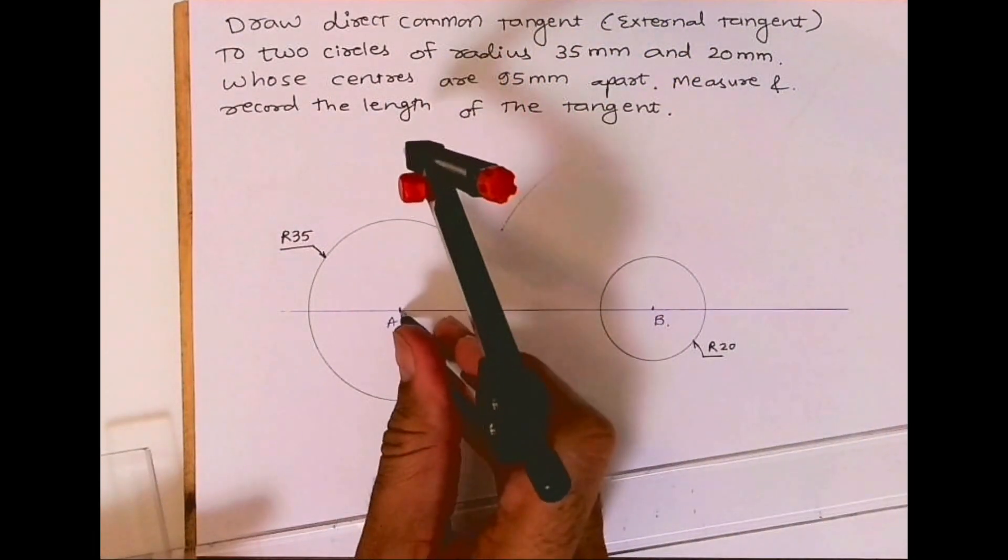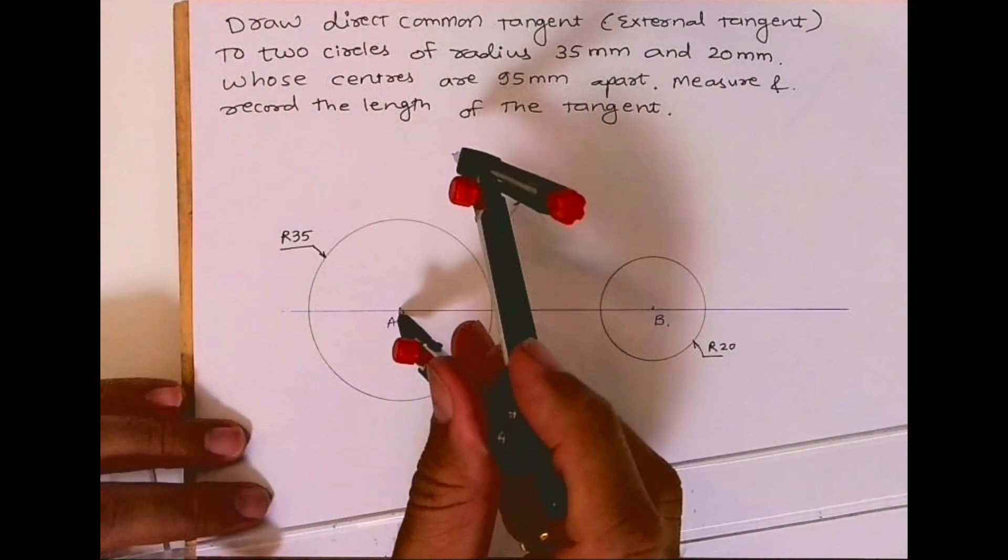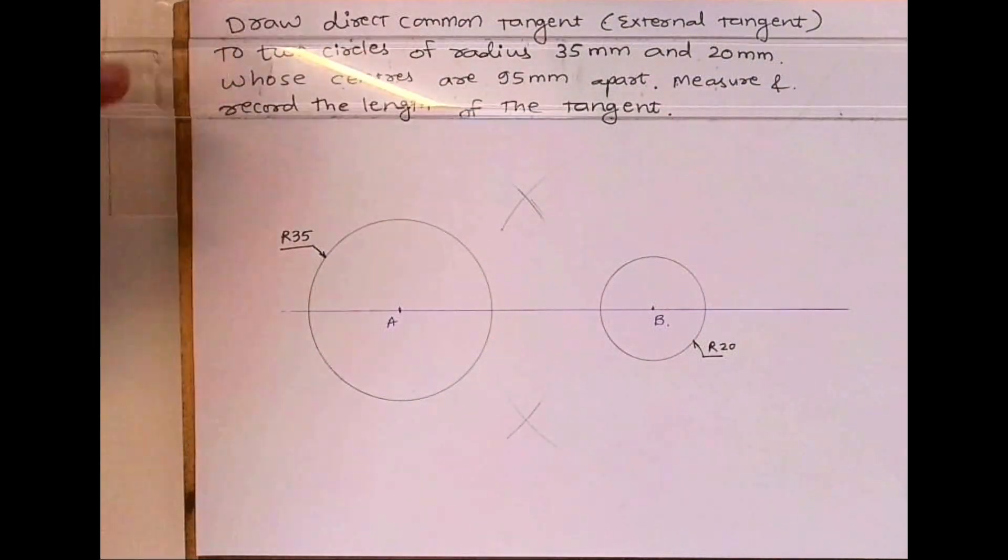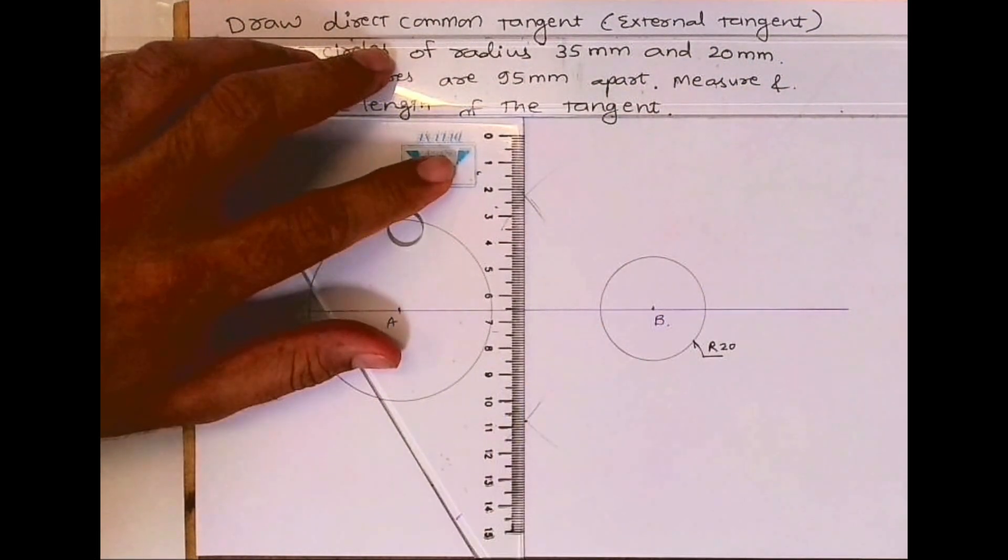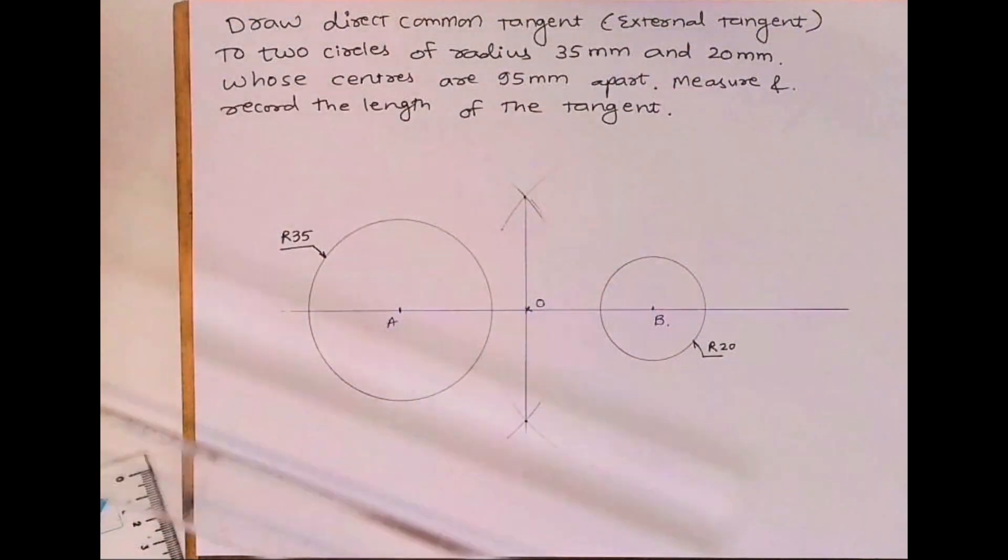So you bisect AB, then draw a vertical line. Wherever it will cut, that is point O. Then take O to A and draw a circle. This is called the mid circle.